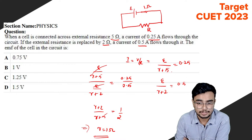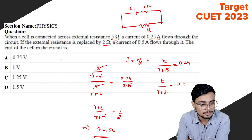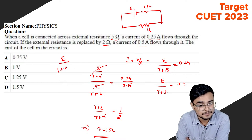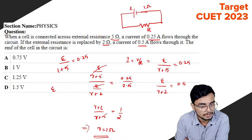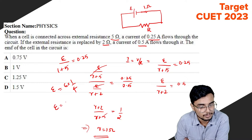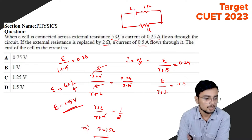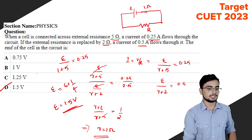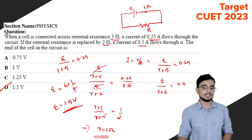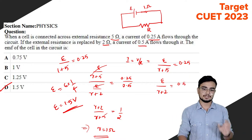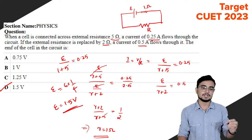Substituting r equals 1 into the first equation: E divided by 1 plus 5 equals 0.25. So E equals 6 times 1/4, giving E equals 1.5 volts. Option D is the correct answer. The concept is simple, just a little lengthy.